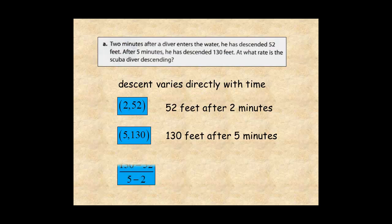So, 130 minus 52 over 5 minus 2, for 78 over 3, or 26. So, the rate of descent is 26 feet per minute.